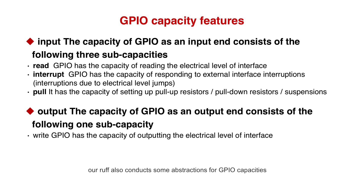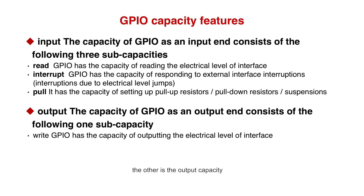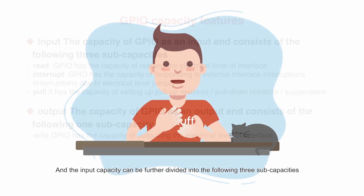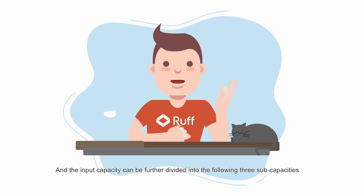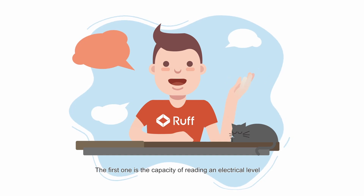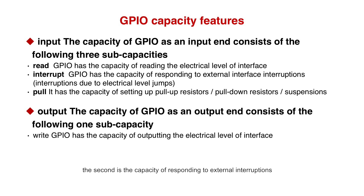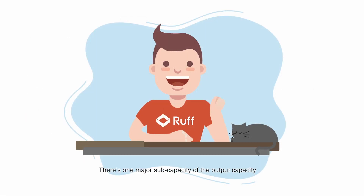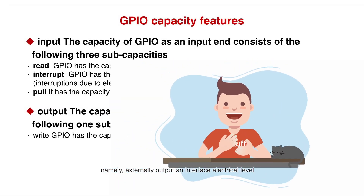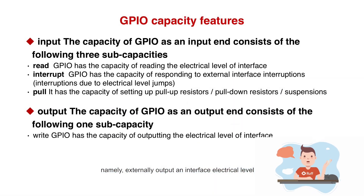Ruff also conducts some abstraction for GPIO capacities. There are two specific main capacities. One is the input capacity, and the other is the output capacity. The input capacity can be further divided into three sub-capacities: the first is the capacity of reading an electrical level; the second is the capacity of responding to external interruptions; and the third is the capacity to set up pull-up resistors, pull-down resistors, or the state of floating. The major sub-capacity of output is externally outputting an interface electrical level.